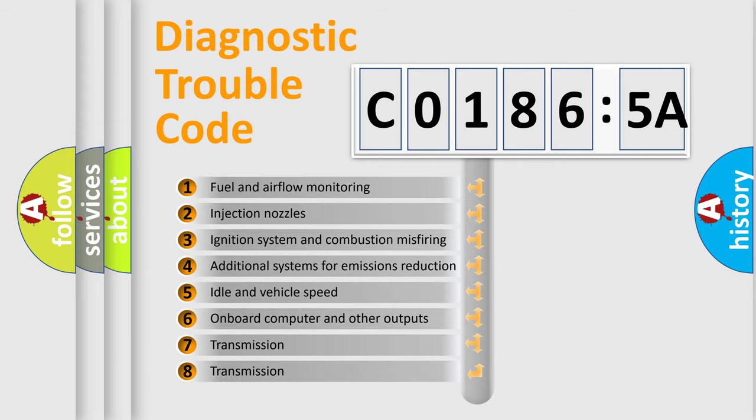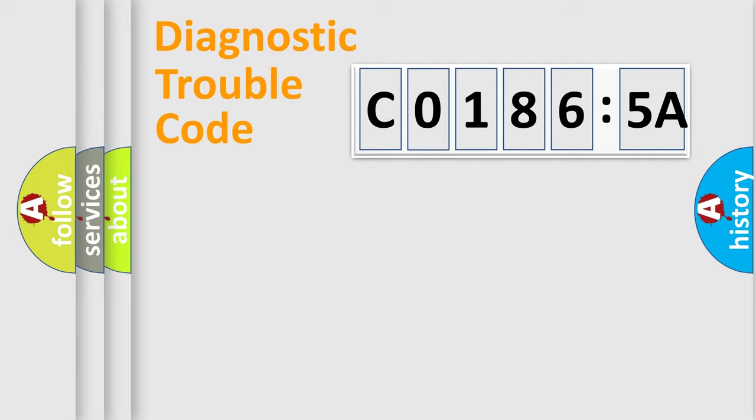The third character specifies a subset of errors. The distribution shown is valid only for the standardized DTC code.